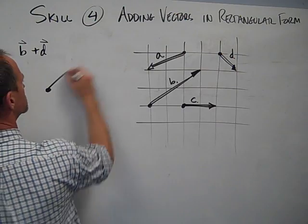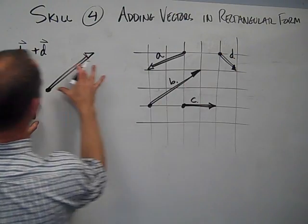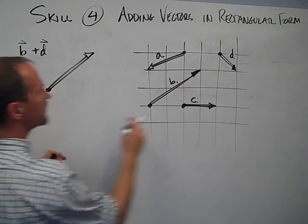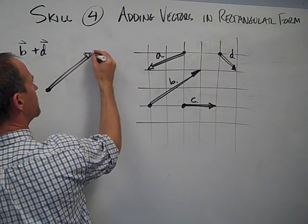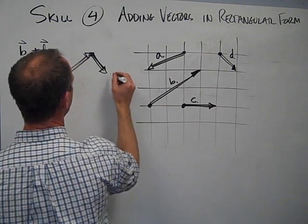So I can take B, and I can express it like this. There's B, I've copied it, picked it up, put it here. To add D to it, all I need to do is pick up that vector and put the tail on the head and draw it as accurately as I can. And there it is.